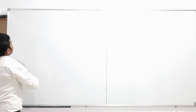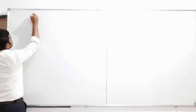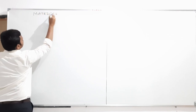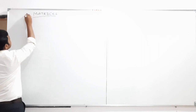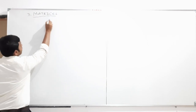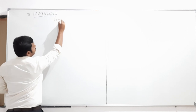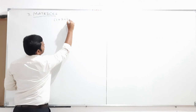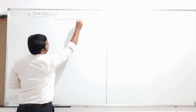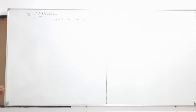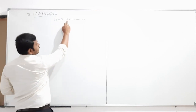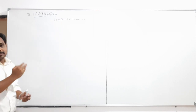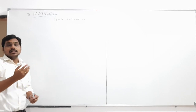So the third chapter is Matrices. The total weightage for this topic is 1 mark for 1 question, 3 marks for 1 question, and 5 marks for 1 question — that is, 5 plus 3 plus 1 equals 9 marks weightage for this topic.